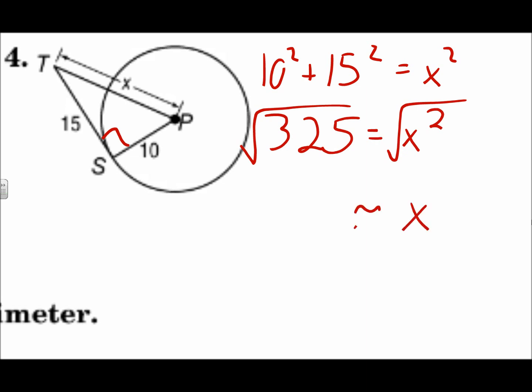10 squared plus 15 squared is 325. To undo the square, square root each side, nearest tenth, and x is approximately 18.0. Do not call that 18. That's 18.0 because it was 18.02. Two rounds down. So the 0 stays the same. That has to be a right triangle there for that to be a tangent. So the Pythagorean theorem helps us solve.